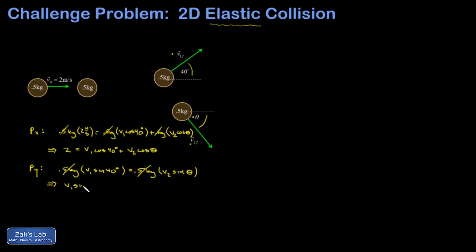The masses cancel out and I get a second useful equation: v1 sin 40 equals v2 sin theta. Finally I look at the kinetic energy. In the initial state I have one half times 0.5 kilograms times the initial speed squared. In the final state I have two things moving: the top ball has speed v1 and the bottom ball has speed v2. The one halves and masses cancel out, and I get a third equation: 4 equals v1 squared plus v2 squared.